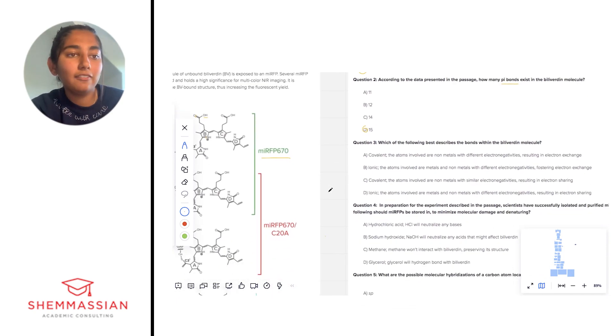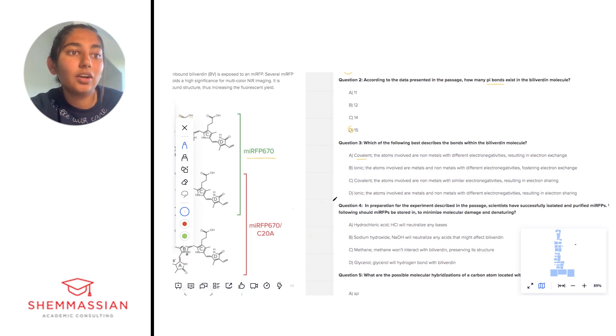Question 3: Which of the following best describes the bonds within the BV molecule? Looking at the answer choices, we're going to be deciding between covalent and ionic, and they have descriptions each. Right away, let's eliminate the answer choices in which the word up front does not match the description after it. So covalent—the atoms involved are non-metals with different electronegativities resulting in electron exchange. The other option for covalent is that the atoms involved are non-metals with similar electronegativities resulting in electron sharing.